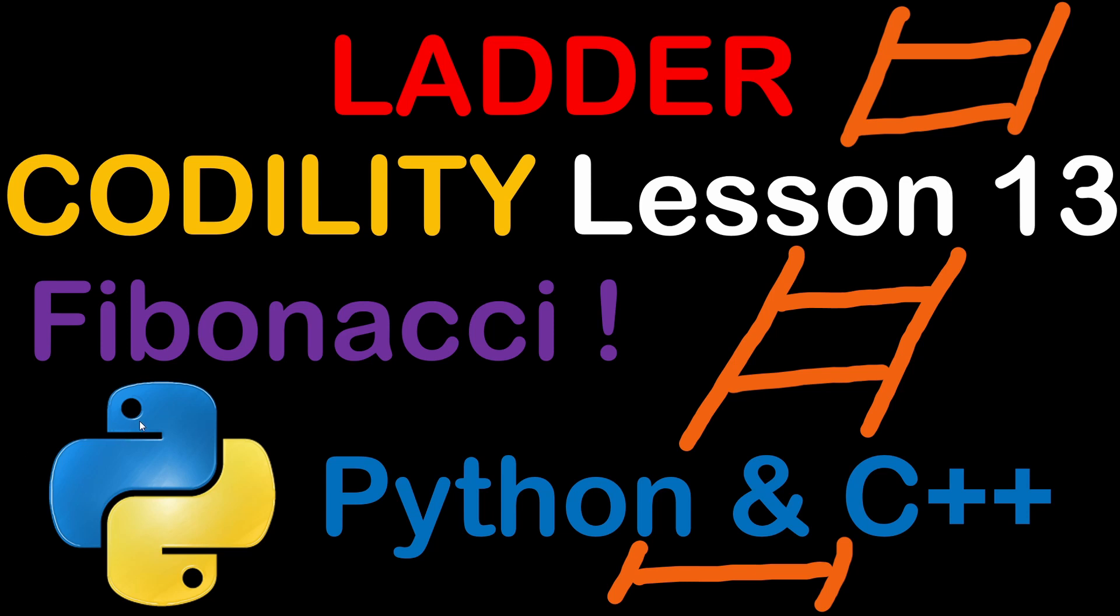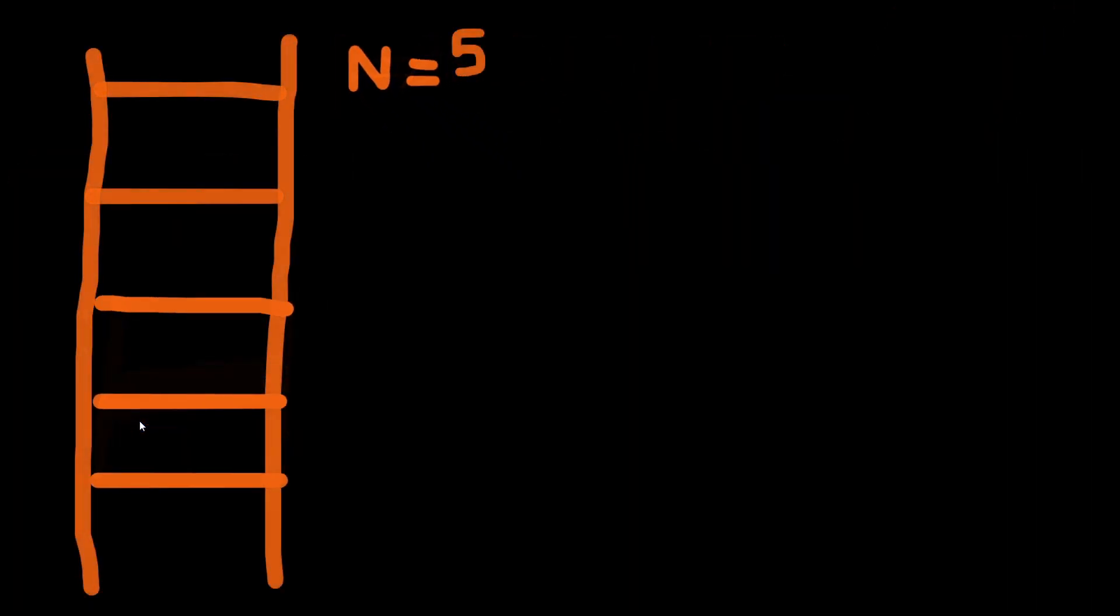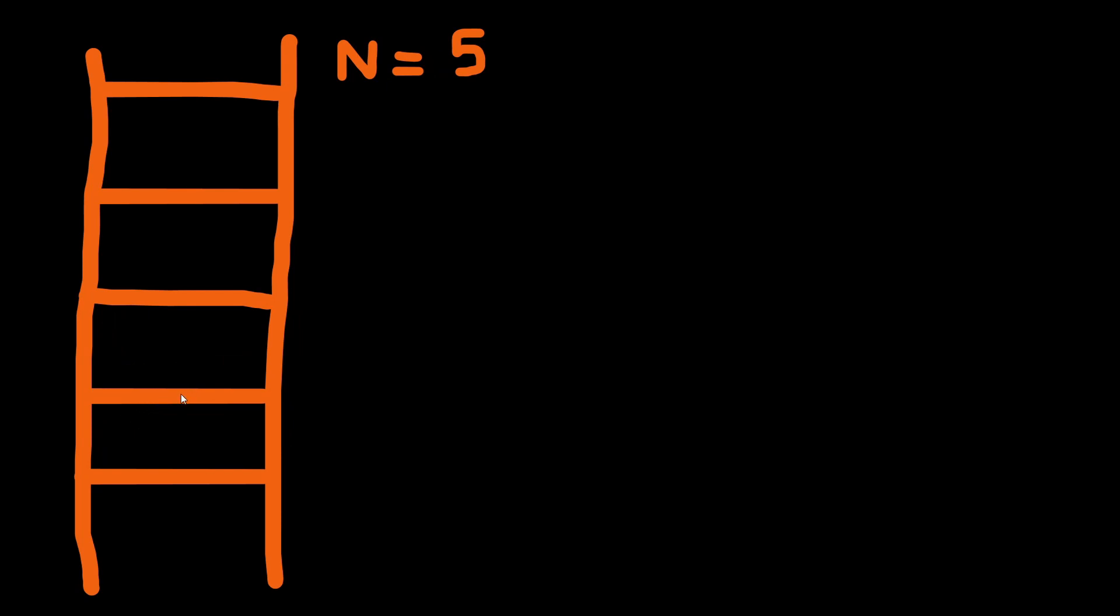In this problem we are considering a ladder of a certain number of rungs and we have to find the number of possibilities to reach the top of the ladder knowing that we can either make one or two steps at once.